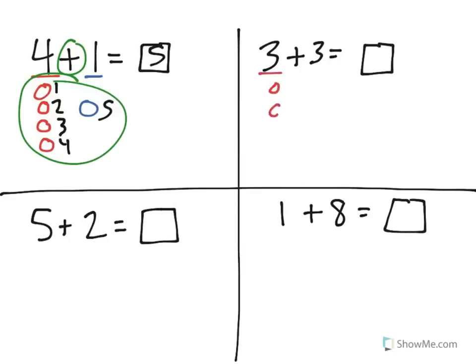Let's try 3 plus 3. We have 3 in one group, 3 in the other, and the addition symbol tells us to find out how many there are in both groups. There are a total of 6 when we add 3 plus 3.